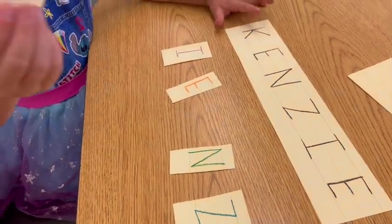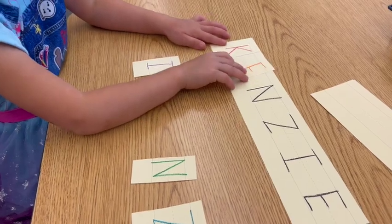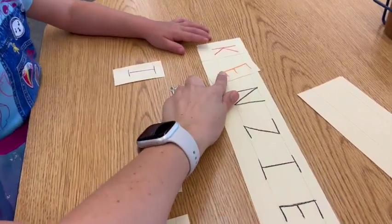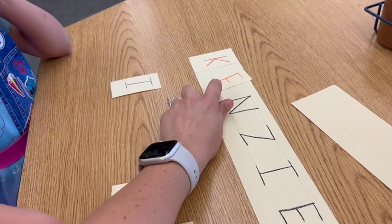Alright, let's get started with our first activity. This is a very simple one and it is a name puzzle. I'm showing you two different levels in this video, so this would be level one. This is for the very early learners.